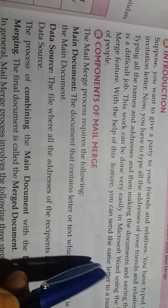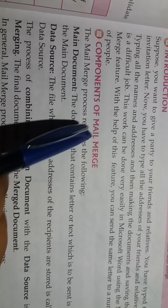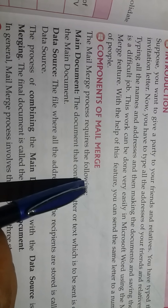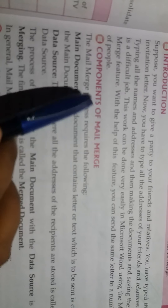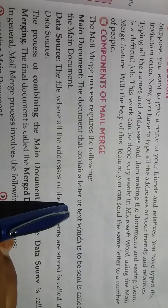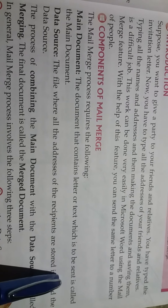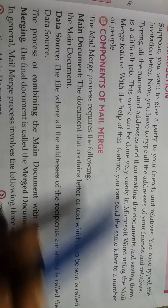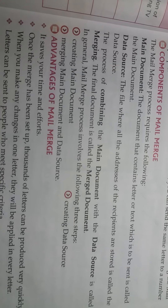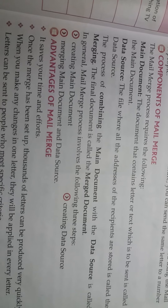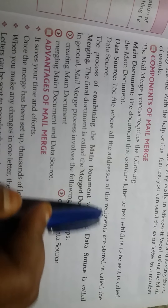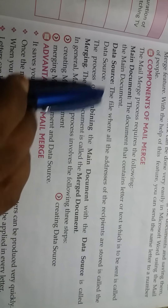Components of mail merge: the mail merge process requires the following components. Main document: the document that contains the letter or text which is to be sent is called the main document. Data source: the file where all the addresses of the recipients are stored is called the data source.